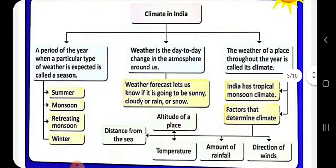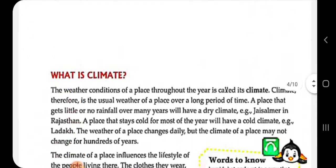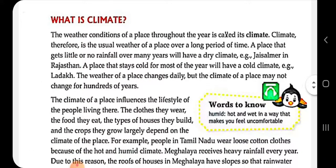What is climate? The weather condition of a place throughout the year — kisi bhi jagah ki weather condition pure saal tak jo hoti hai, that is its climate. It is the usual weather of a place over a long period of time. A place that gets little or no rainfall over many years will have a dry climate.